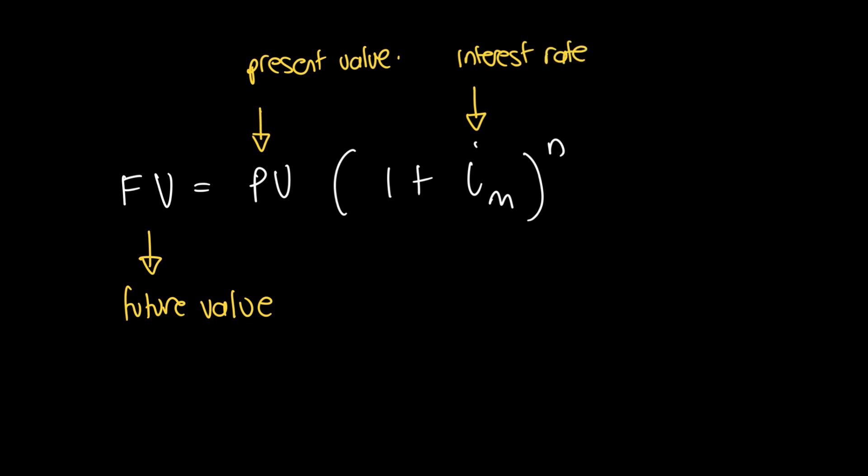The interest rate is in decimal fraction notation, in other words zero point something, or you take the percentage like 10% and divide by 100. m is the compounding periods, and n is the duration.